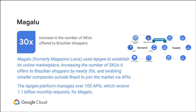A great example is Magalu — if you're not familiar, they used to be called Magazine Luiza. They're the largest retailer in Brazil and have been a brick-and-mortar retailer for a very long time. Over the last few years, they started to change into more of a platform that third parties use to do commerce in Brazil. They have about 100 APIs, but thousands of partners and suppliers who use their platform to sell products and ship using their supply chain — very much like Amazon in the US became not just an online store but a platform for e-commerce. Magalu is doing the same thing in Brazil.